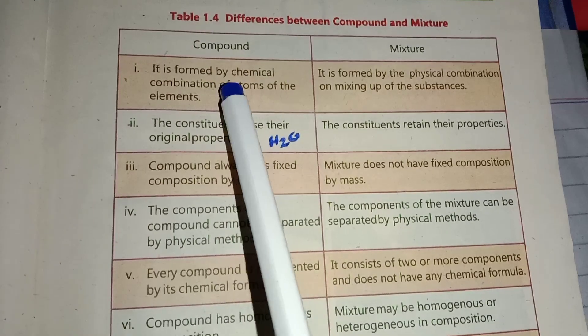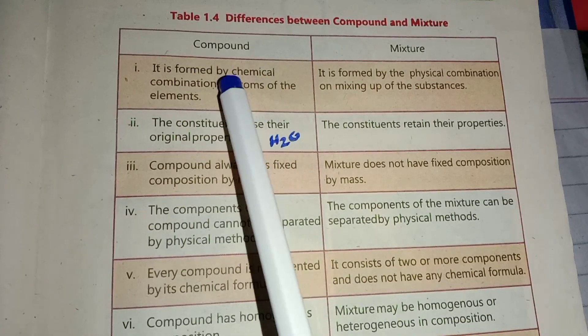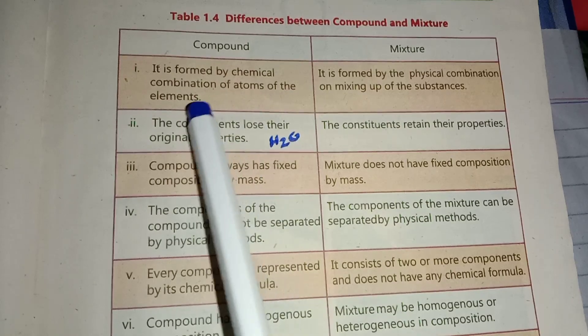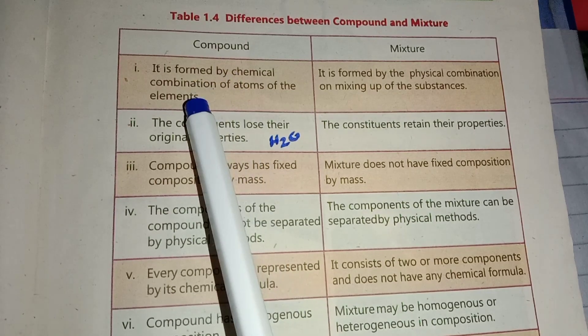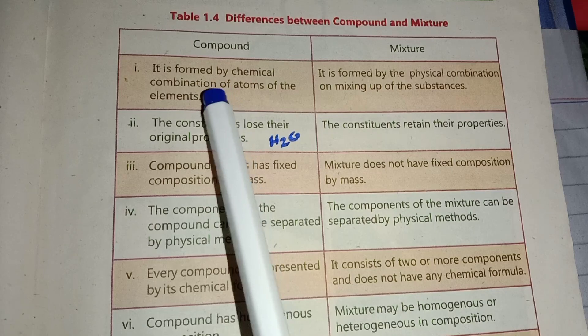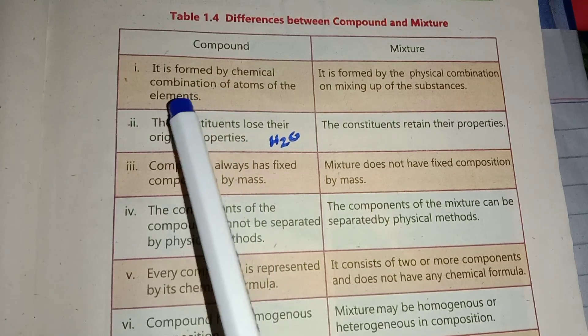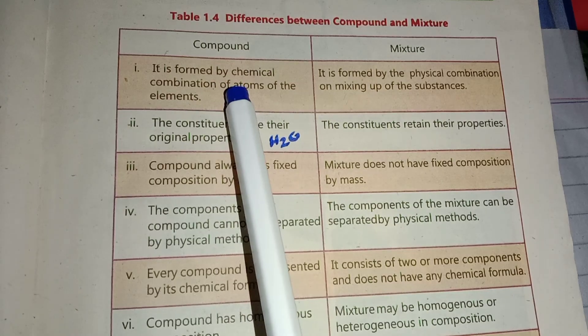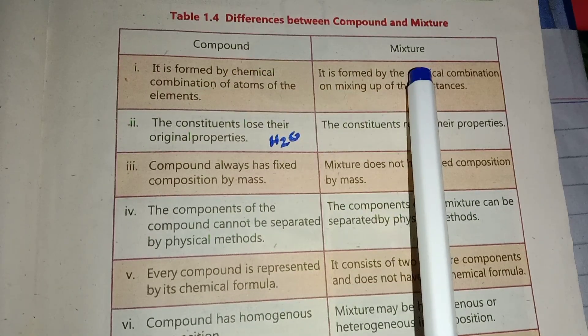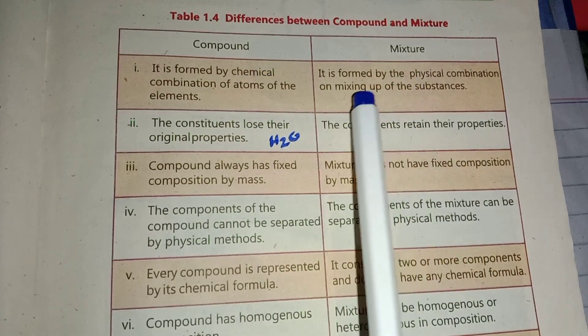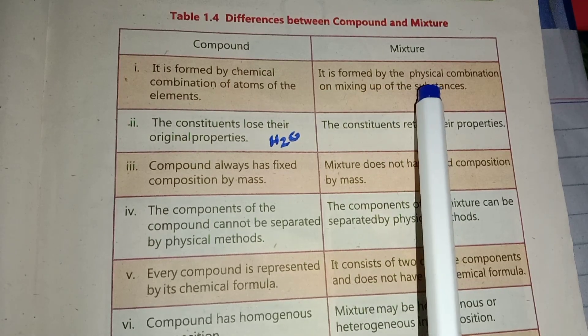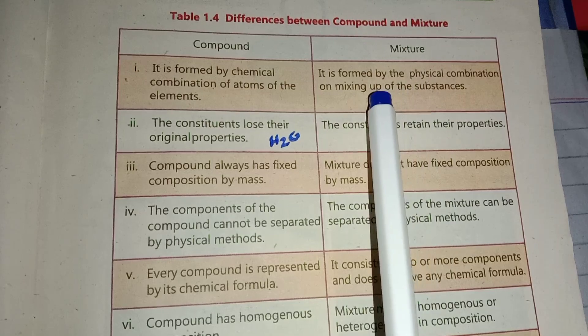Compounds are formed by chemical combination of atoms of the elements. Atoms combine chemically by sharing electrons and protons, creating a new substance. Mixtures are formed by physical process - physically two or more substances are combined together.